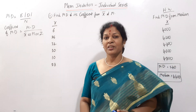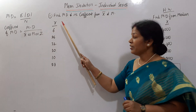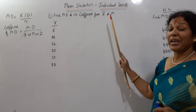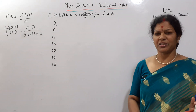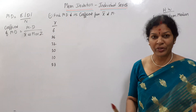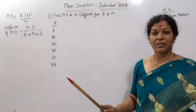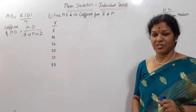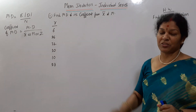Now we will see one problem in individual series. Find mean deviation and its coefficient from X̄ and median — from both. This is individual series; X is given with no frequency. If frequency were also given, then that would be discrete series. First, let us calculate mean deviation from X̄.